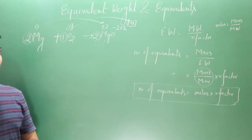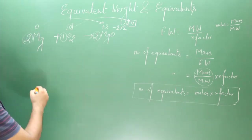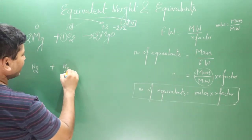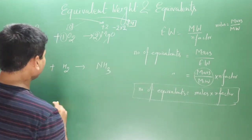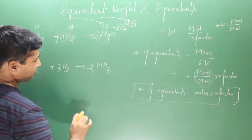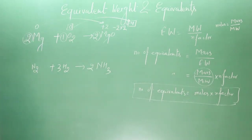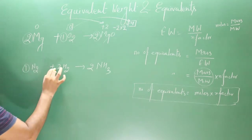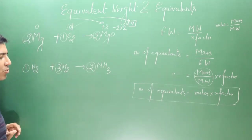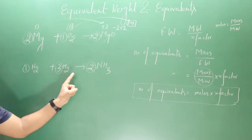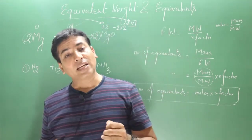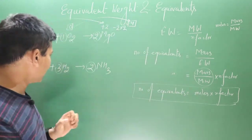Let me take one more chemical reaction — the synthesis of ammonia. Ammonia is formed by the reaction between nitrogen gas and hydrogen gas: N₂ + 3H₂ → 2NH₃. One mole of N₂ reacts with three moles of H₂ to produce two moles of NH₃. If we multiply these moles by their respective n-factor values, we can calculate the equivalents.